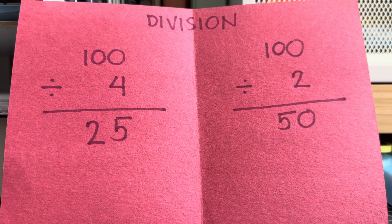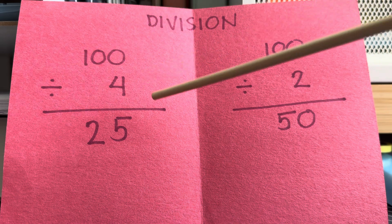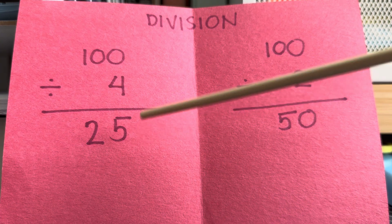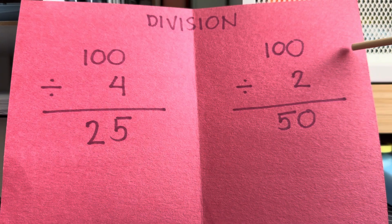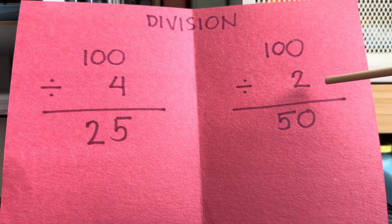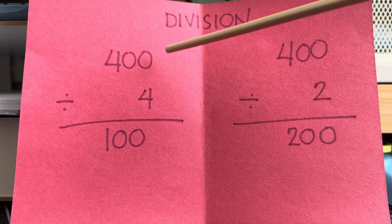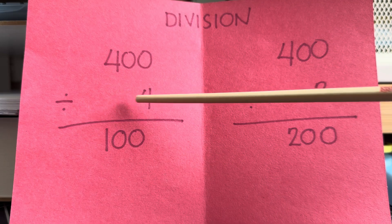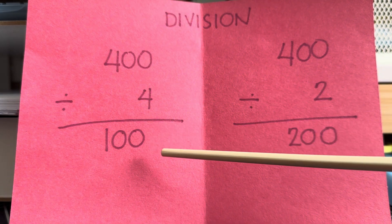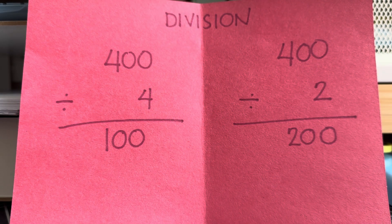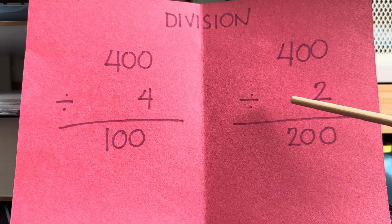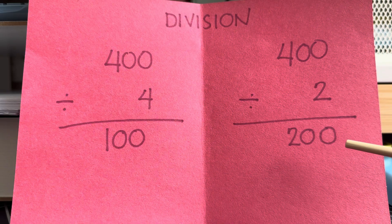Next is 100 divided by 4 is equals to 25, while 100 divided by 2 is equals to 50. Let's try another example. 400 divided by 4 is equals to 100. 400 divided by 2 is equals to 200.